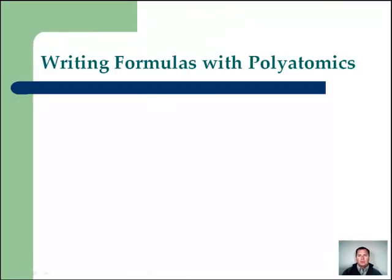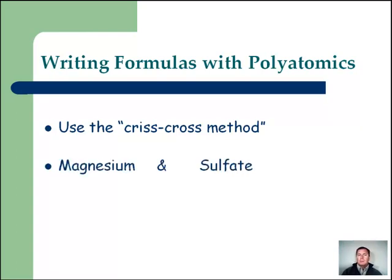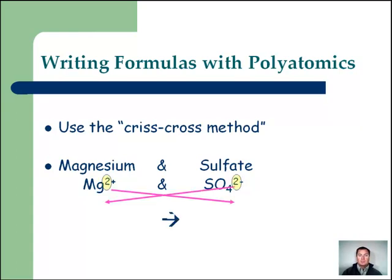Let's talk about writing formulas with polyatomics. It's simple — you're doing what you already know how to do: the crisscross method, where we crisscross the charges. For magnesium and sulfate: magnesium is plus two, and sulfate from the poly sheet is SO4 minus two. We crisscross and drop the charges. We get MgSO4. We don't bring the twos down because they're equal — just like with binaries, if charges are equal we use the empirical formula, so we write MgSO4.